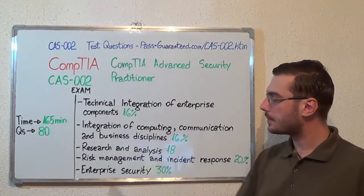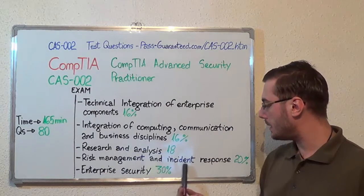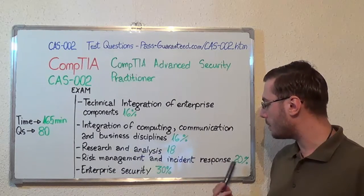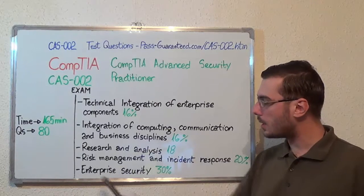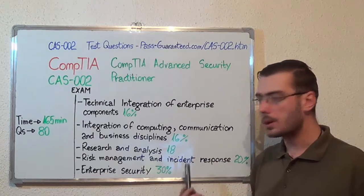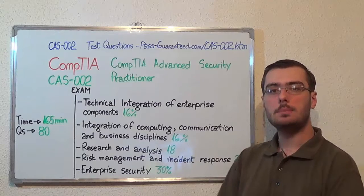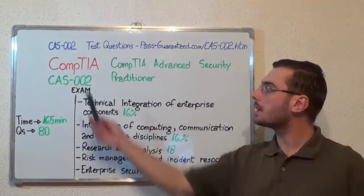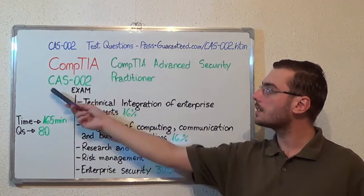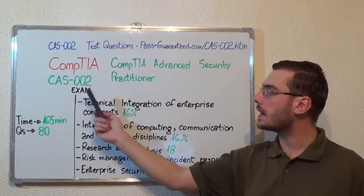Next, risk management and incident response, with 20%. And the last one is enterprise security, with 30%. You can visit passguarantee.com to successfully pass the CompTIA CAS-002 exam.